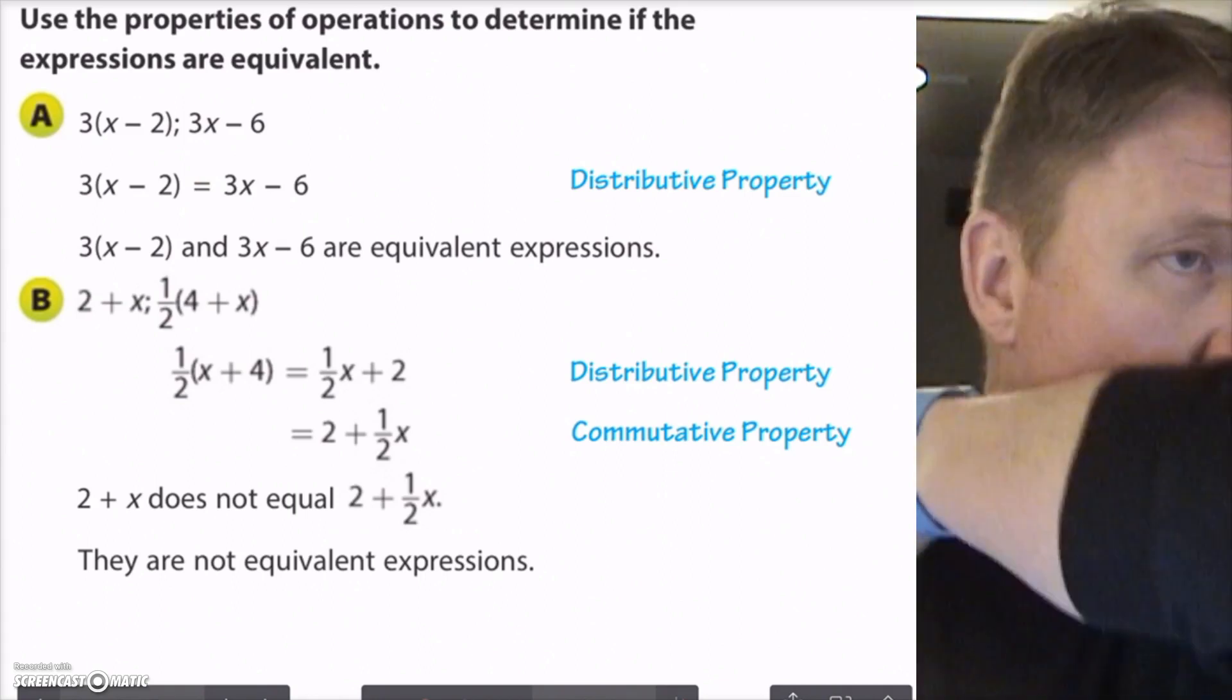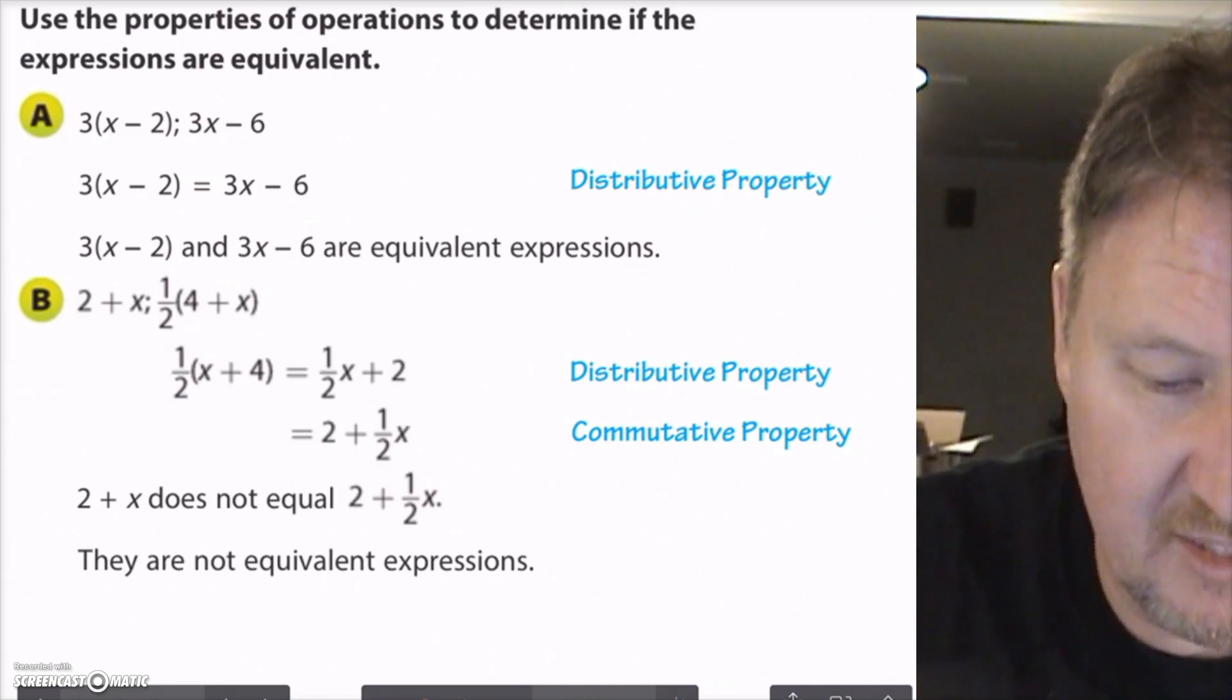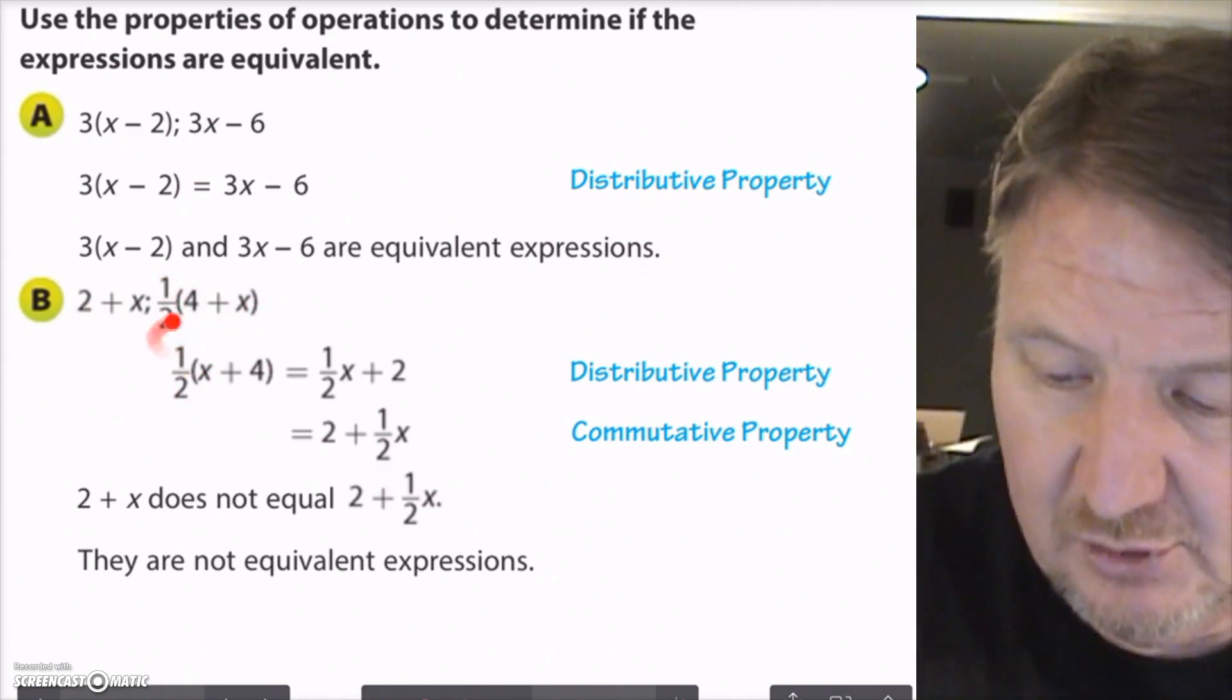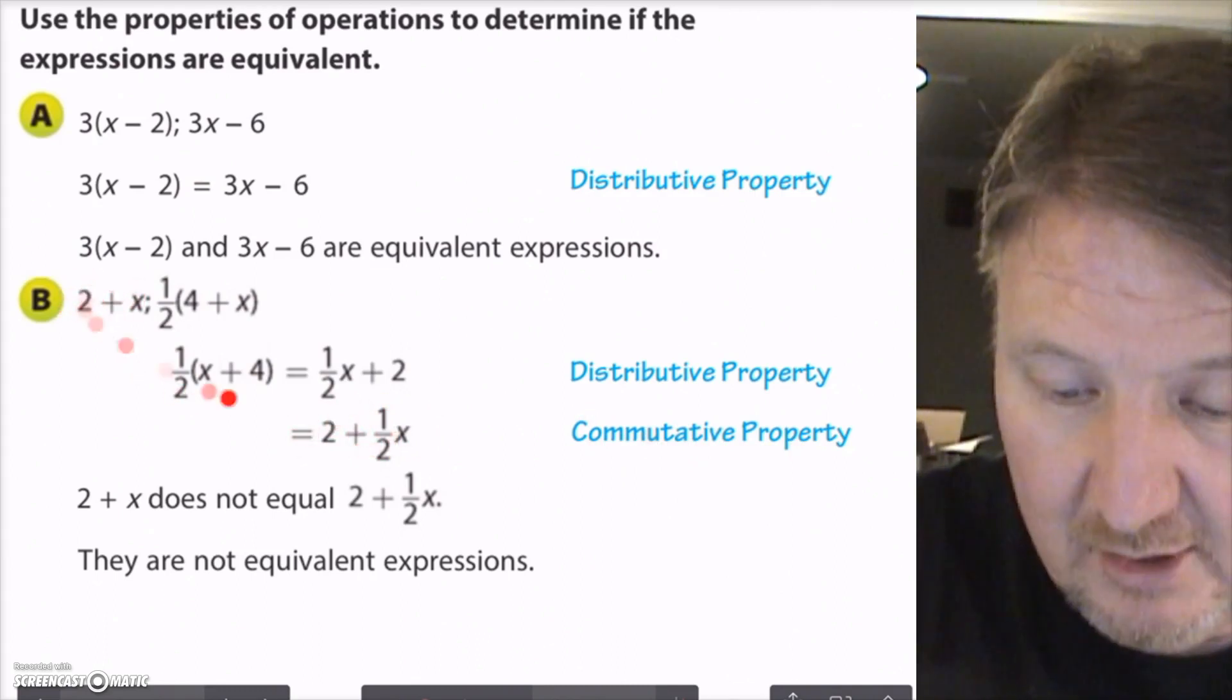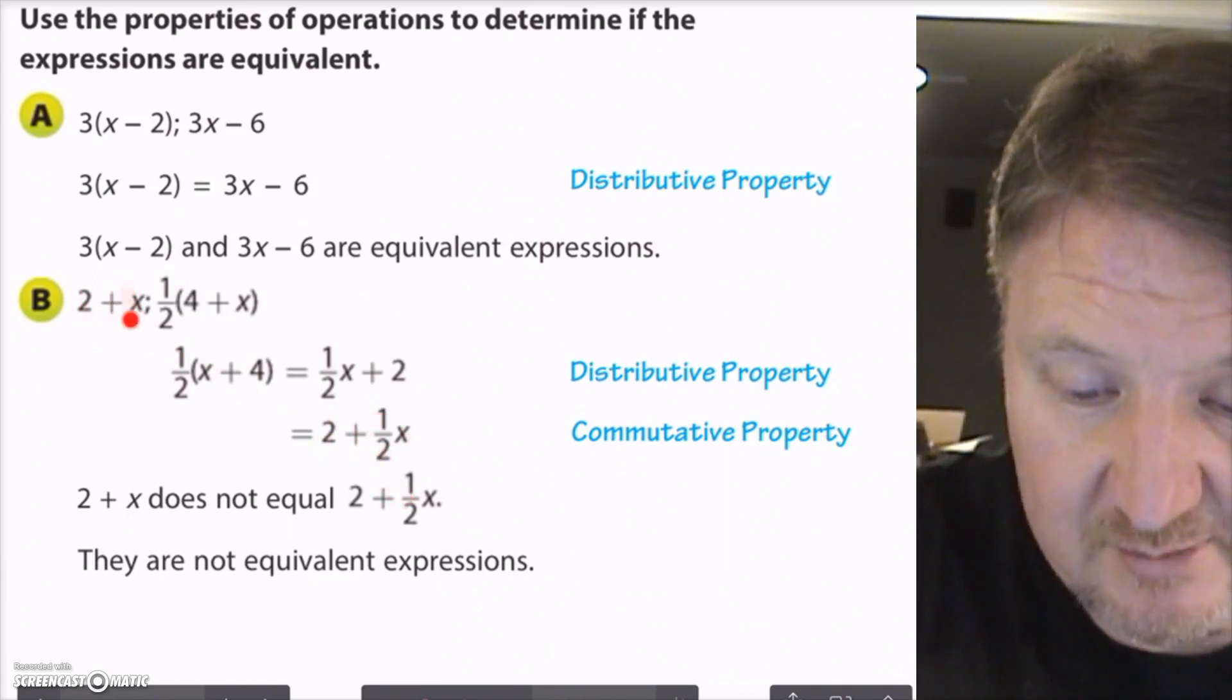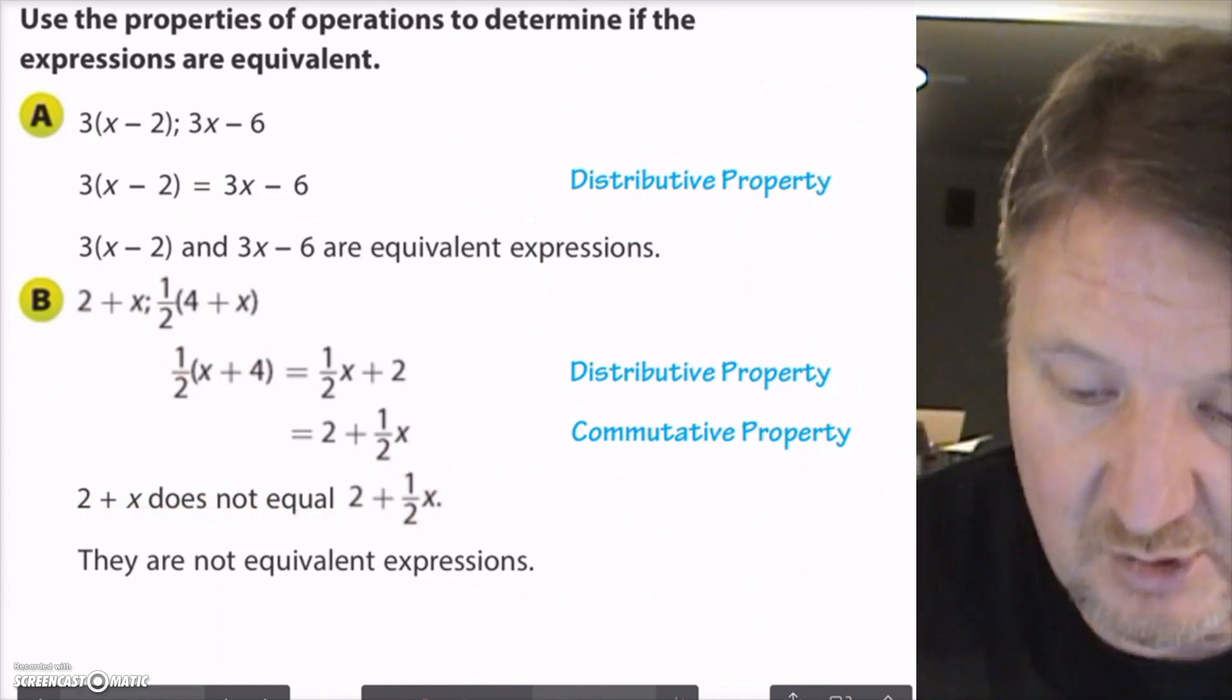So the same thing happens on this next problem. I have 2 plus x, and then I have 1 half times 4 plus x. So on this one here, I've got to use the distributive property to go ahead and combine these terms. So I say 1 half times x plus 1 half times 4. So what I wind up with is 1 half x plus 2. And then I use the commutative property to kind of turn it around and make it look like this problem here. I put my constant first, and then I put my variable with the exponent next. Now, this one doesn't have a number in front of the exponent. It doesn't have one. So that means it's not equal. So 2 plus x does not equal 2 plus 1 half x. They're just not equivalent expressions.